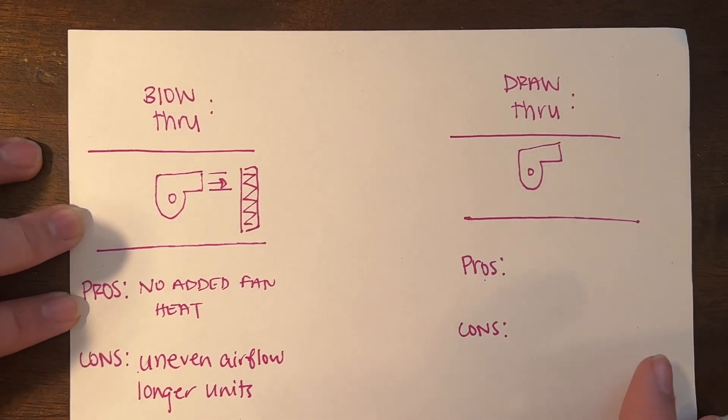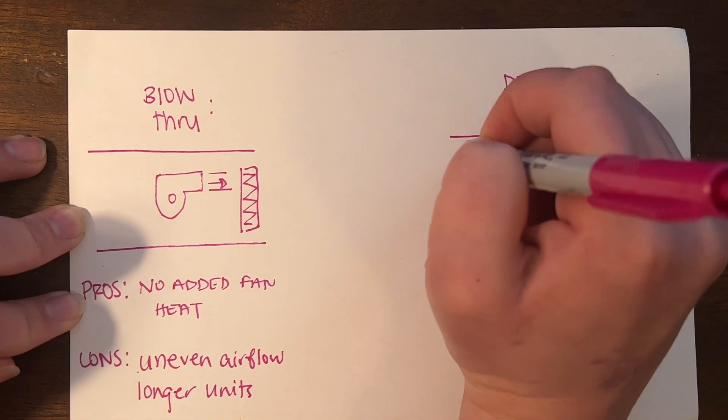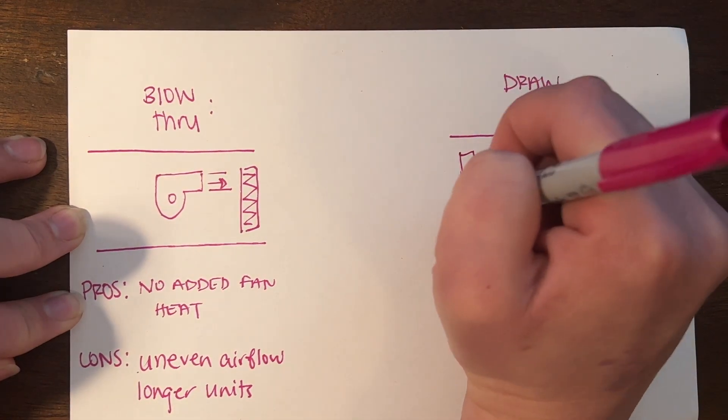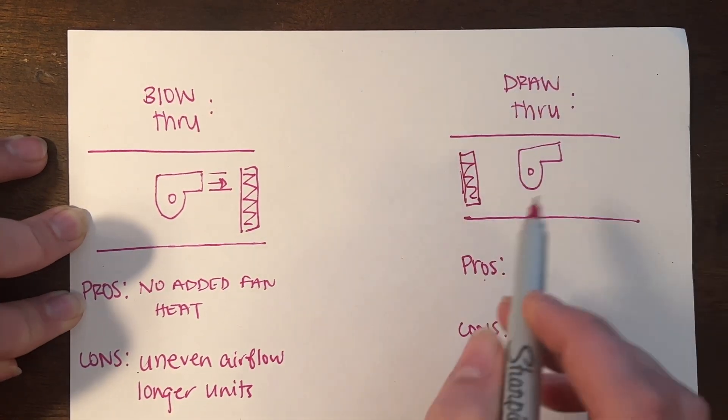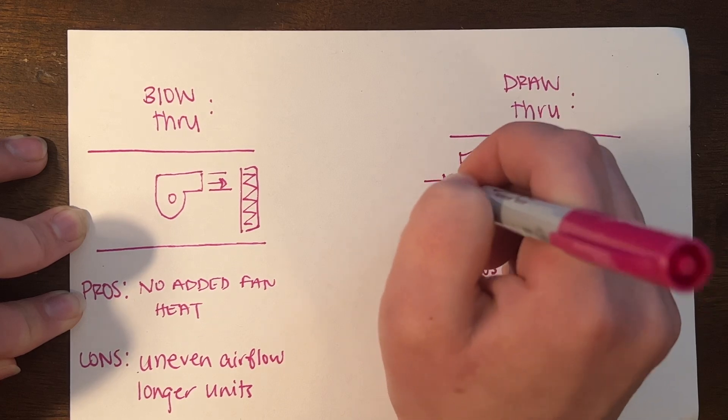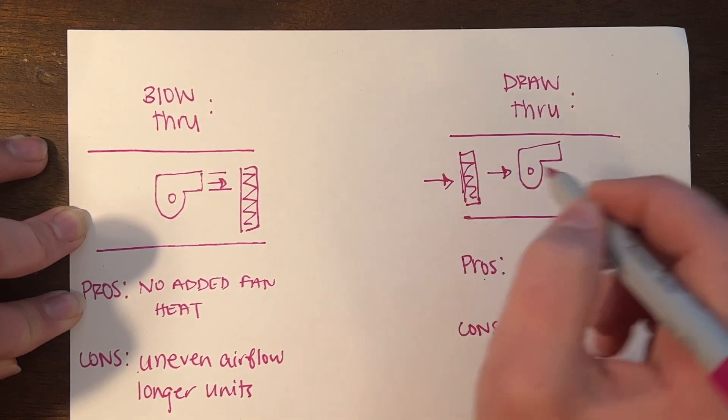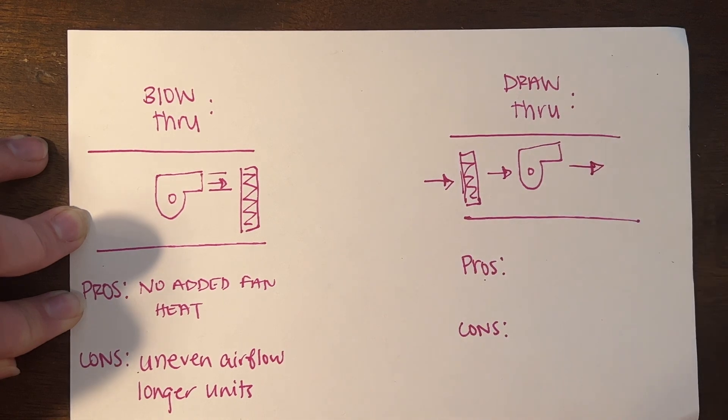A draw through is the opposite of a blow through. You have your coil prior to your fan, so it draws air through the coil and then blows it out into your system.